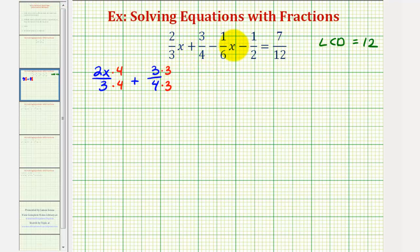Then we have minus 1/6 x, which is the same as x over 6. So we have minus x over 6. And since 6 times 2 equals 12, we'll multiply the top and bottom by 2. Minus 1/2, again since 2 times 6 is 12, we'll multiply the top and bottom by 6. And then finally on the right side, we have 7/12.